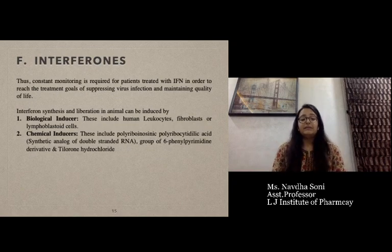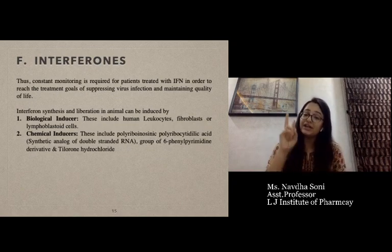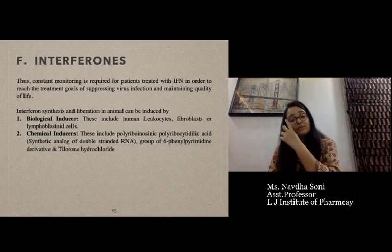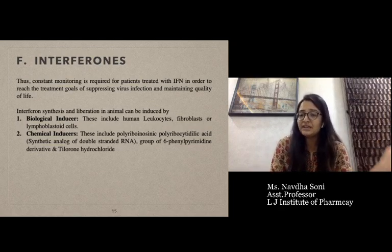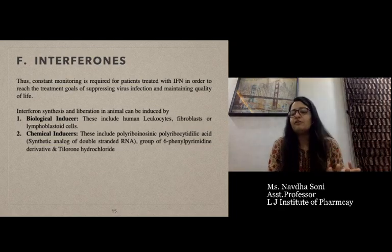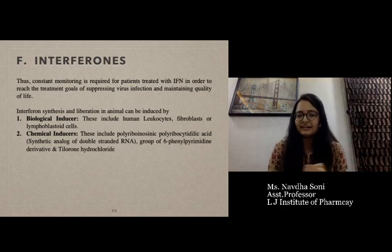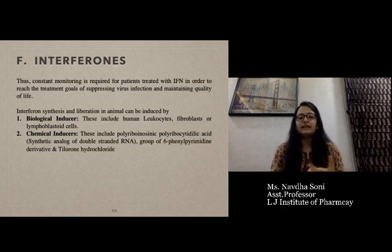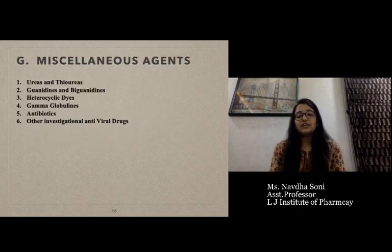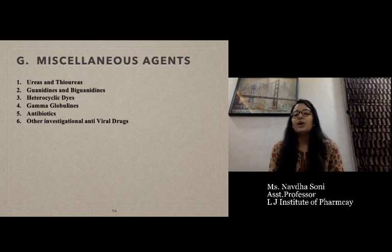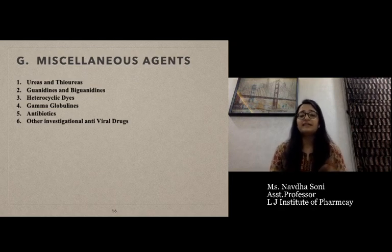Interferon synthesis and liberation in animals can be induced by two mechanisms: biological inducers and chemical inducers. Biological inducers include human leukocytes, fibroblast, and lymphoblastoid cells. Chemical inducers include synthetic analogs of double-stranded RNA. Miscellaneous agents include urea and thiourea, guanidine and biguanidine, heterocyclic dyes, gamma globulin, antibodies, and other investigational antiviral drugs.